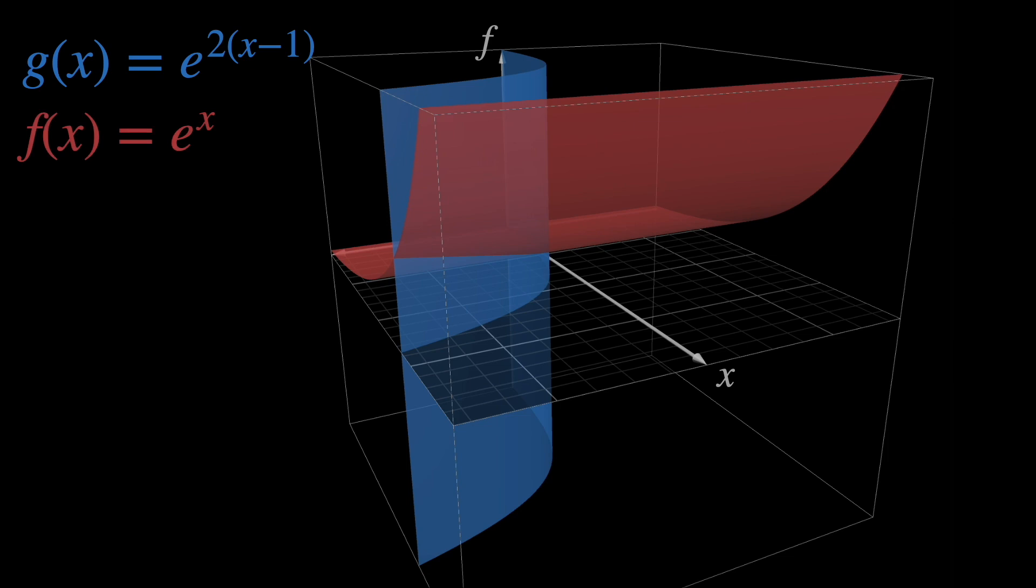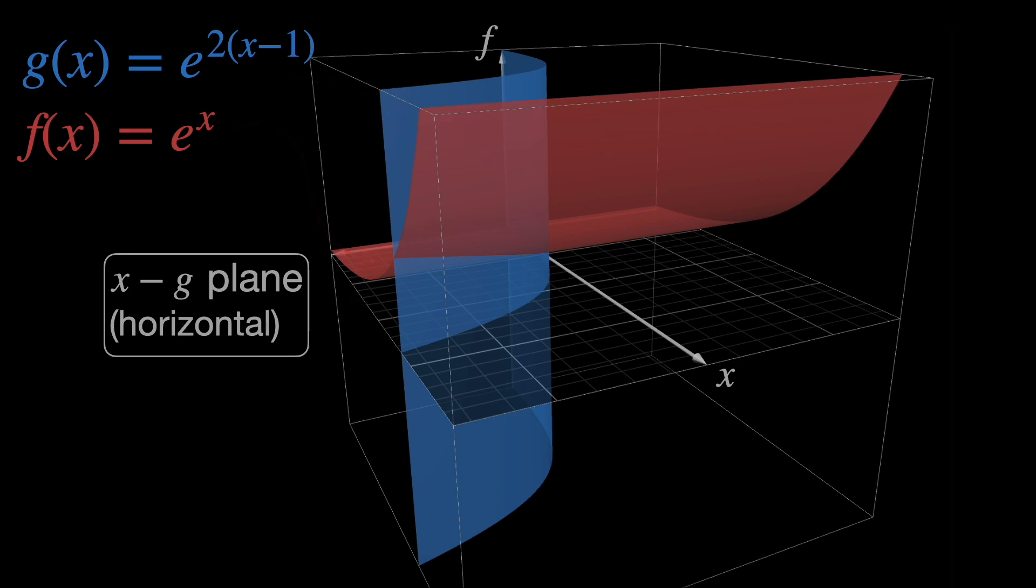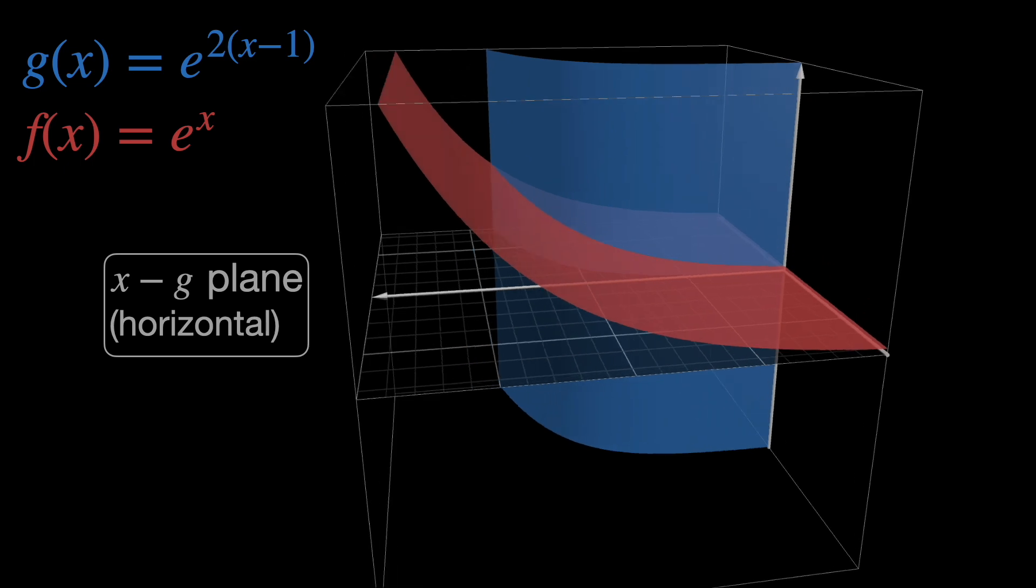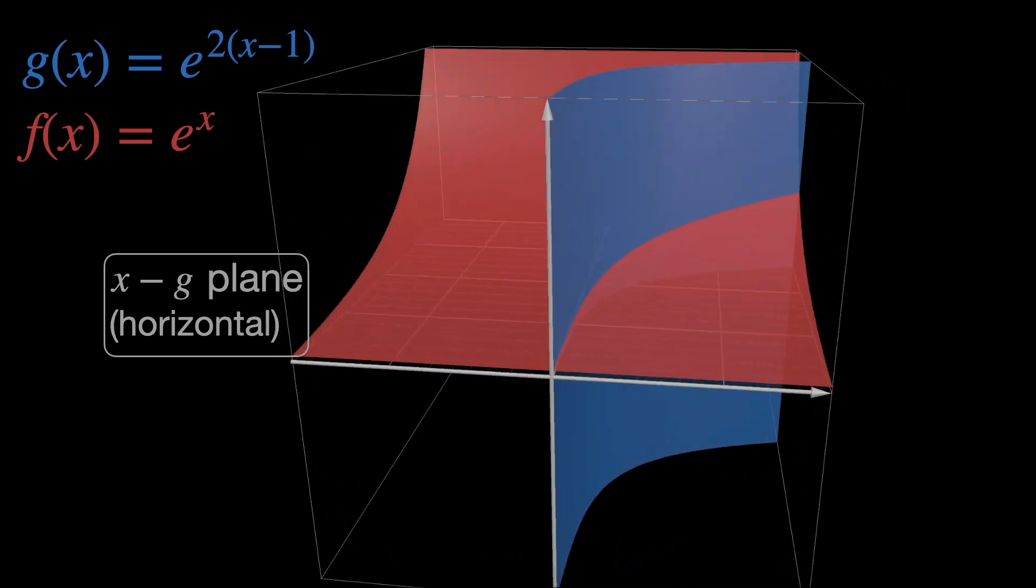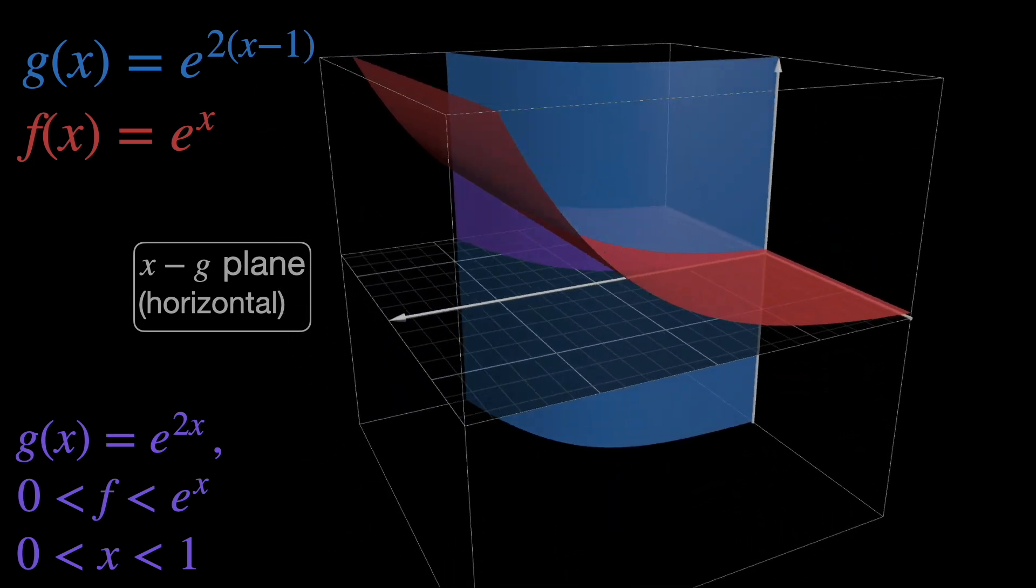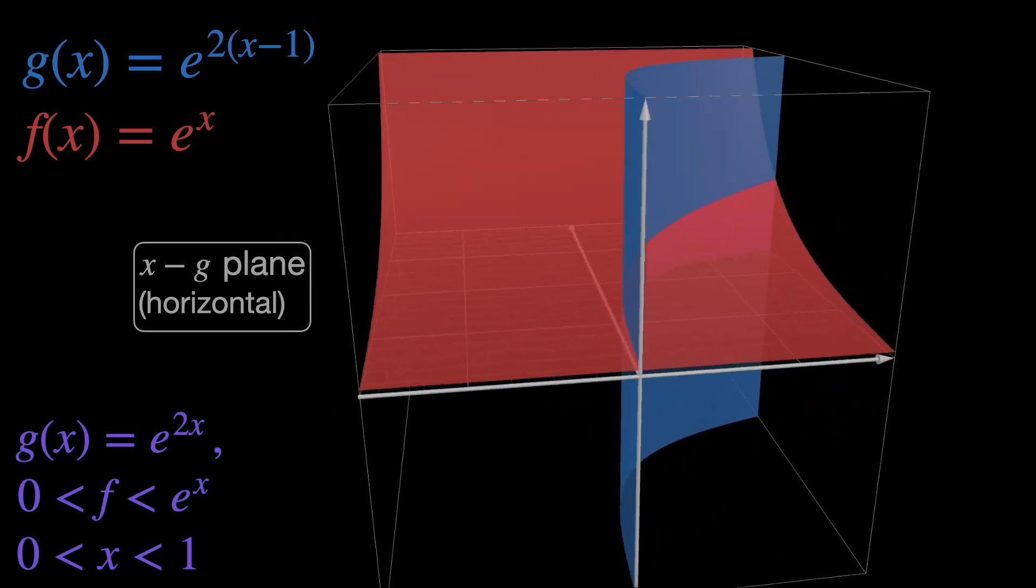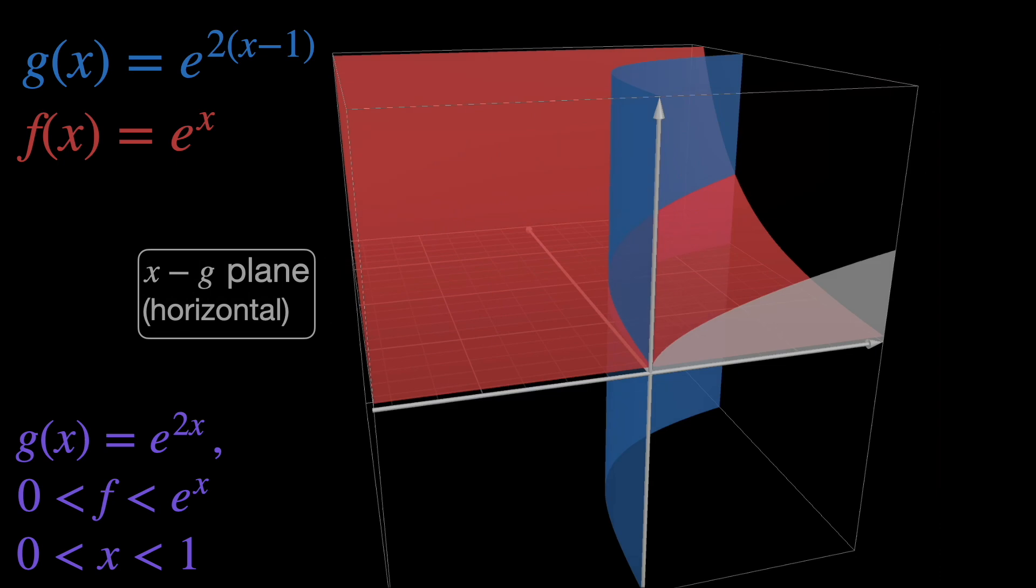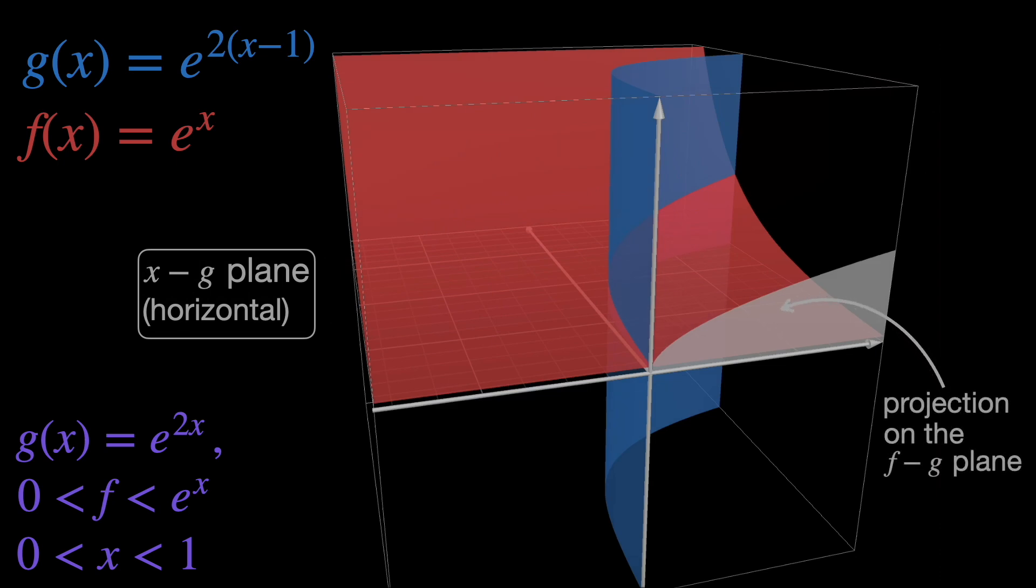g of x will be the blue surface now, and f of x the red one, and the xg plane is horizontal, just as before. Once again, we see that this is the fence, or surface, that we are interested in. And its shadow, or projection, is this one.